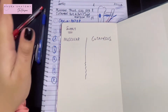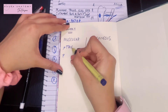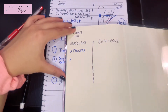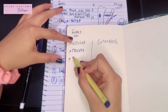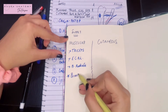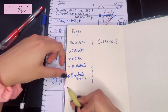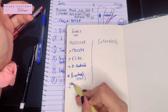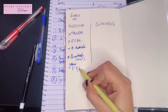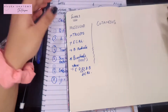The muscles that the radial nerve supplies are all the extensor muscles of the upper limb. These include the triceps, which is the muscle of the extensor compartment of the arm. Then we have the extensor compartment of the forearm: the extensor carpi radialis longus, the brachioradialis, and the brachialis — however, to the brachialis it only gives proprioceptive fibers, remember that. Other muscles include the extensor digitorum, the extensor carpi radialis brevis, and the extensor carpi ulnaris.